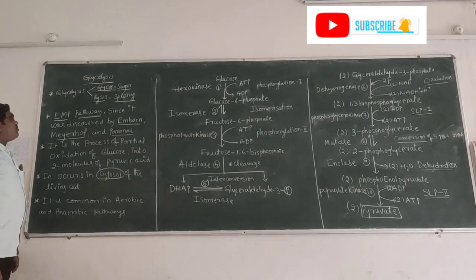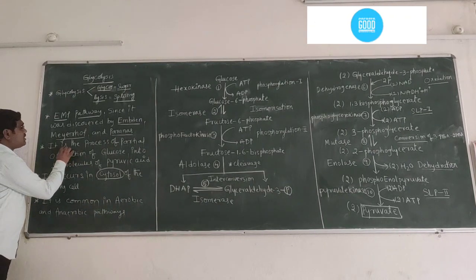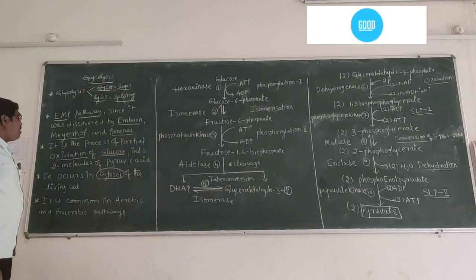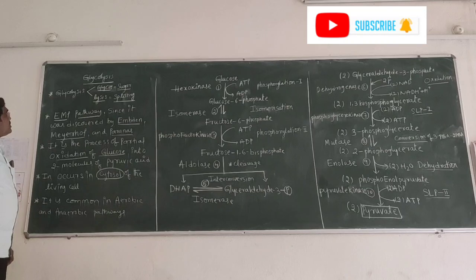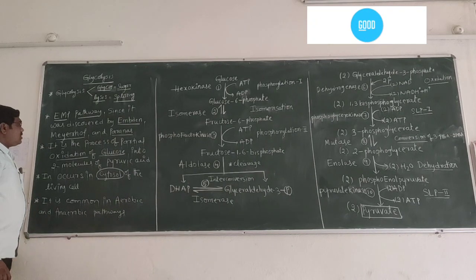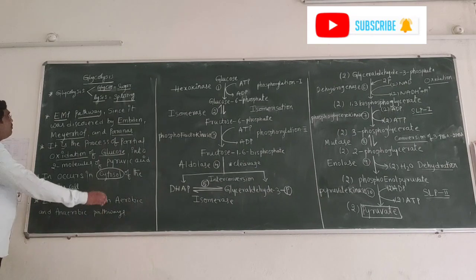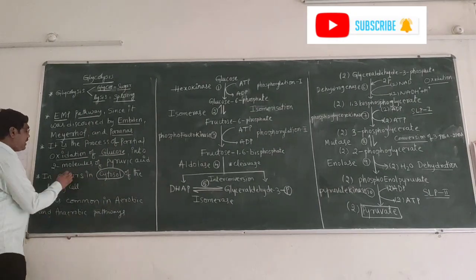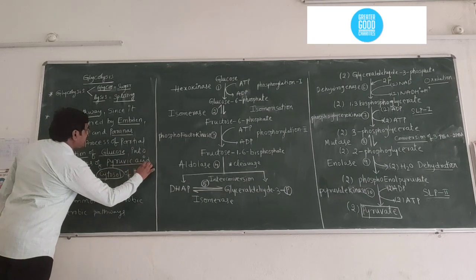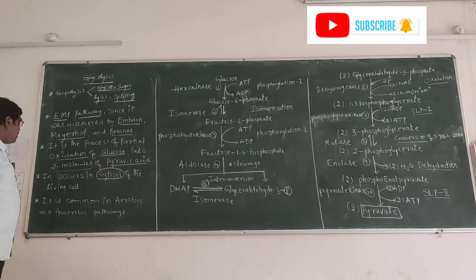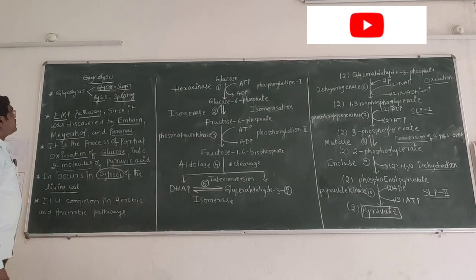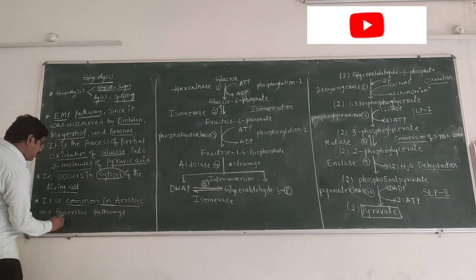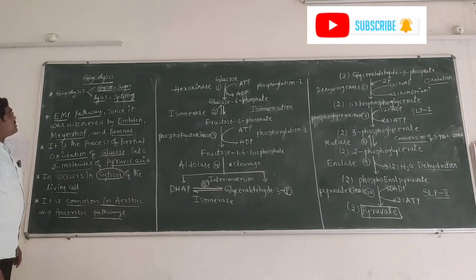The main concept of glycolysis is the partial oxidation of glucose. The end product is two molecules of pyruvic acid — one glucose molecule is converted into two molecules of pyruvic acid. It occurs in the cytosol of living organisms, and importantly, glycolysis is common to both aerobic and anaerobic pathways.